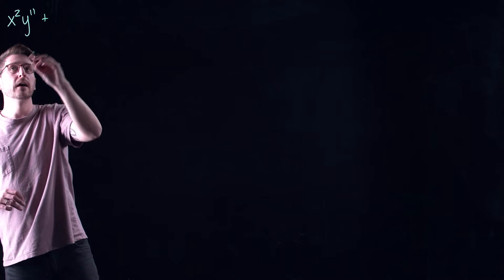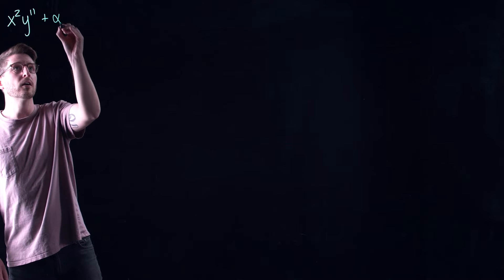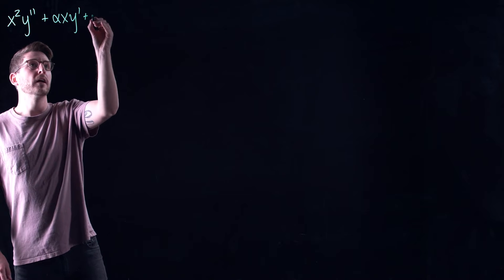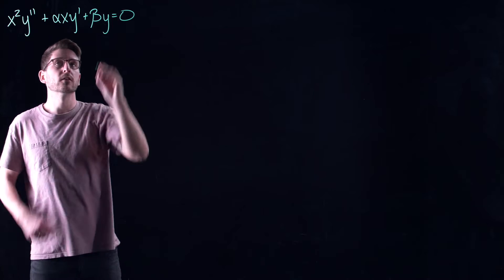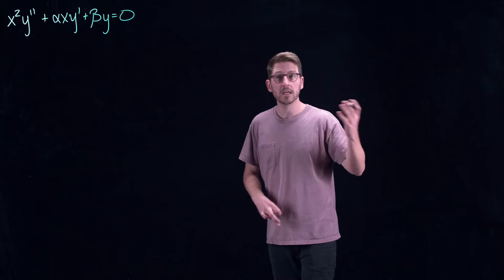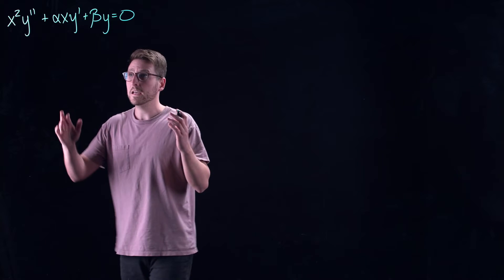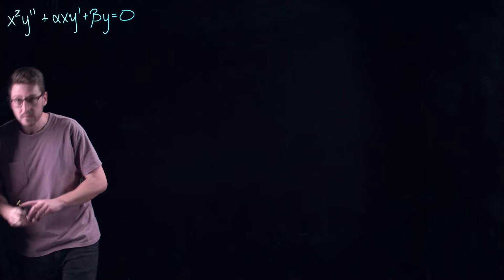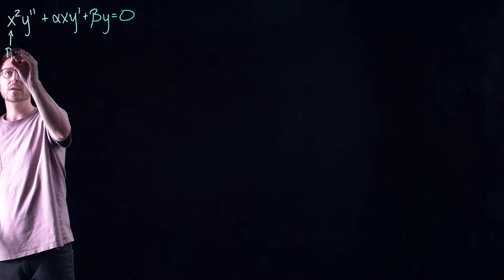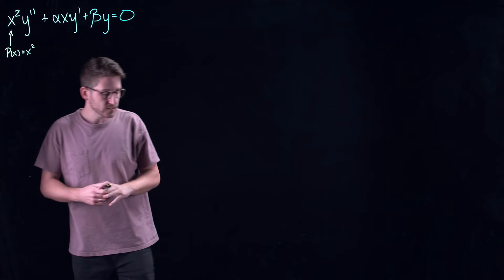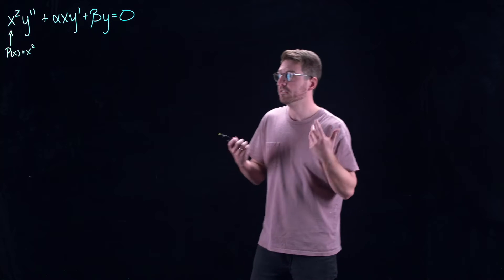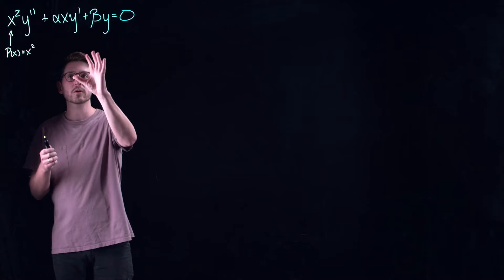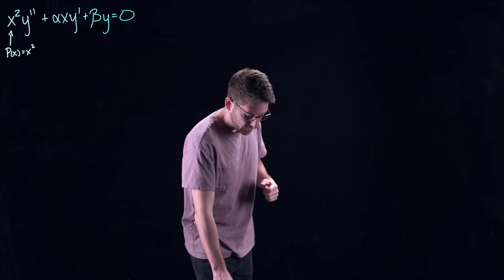We don't even really need to talk about series in this lecture. We will look at what are known as Euler equations. In this case we have x squared y double prime plus alpha x y prime plus beta y equals zero, with constants alpha and beta. It's a linear ODE, and the most important aspect is that p of x equals x squared, so these equations have singularities at x equal to zero — they vanish at x equals zero, which violates the criteria for regular points.